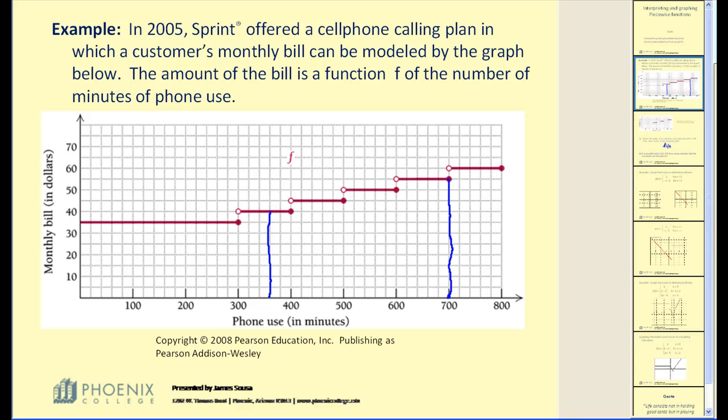In fact, if a customer used, let's say, 640 minutes, the bill would be $55. 620 minutes would still be $55. Now 600 is at the dividing line. If the customer used 600 minutes, the bill would be $50. But if they used 601 minutes, it would jump up to $55. In fact, if it was 600.001 minutes, it would jump to the next interval.